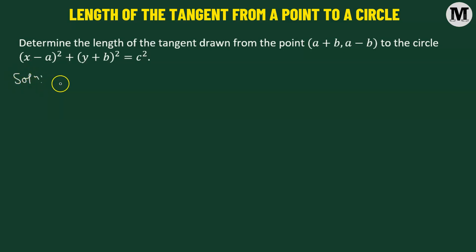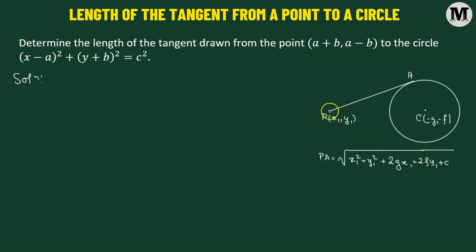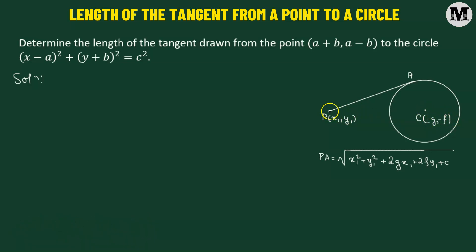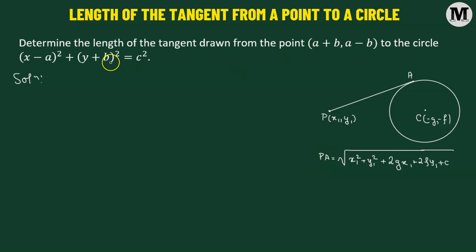In order to find out the length of the tangent, let's recap the formula we'll be using. We have a point P having coordinates x1 comma y1, external to the circle with center C having coordinates negative g comma negative f. Then PA is the tangent to the circle at point A, and the length of this tangent PA is given by the square root of x1 squared plus y1 squared plus 2g x1 plus 2f y1 plus c.